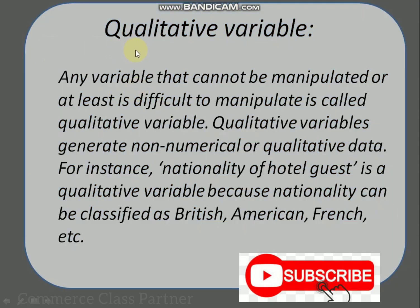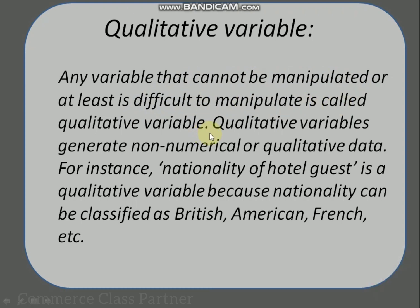Qualitative variables are those that cannot be quantified numerically, or at least are difficult to manipulate numerically. For example, the nationality of hotel guests is a qualitative variable. Guests may be British, American, or French — these are categories of nationality, not numerical values.